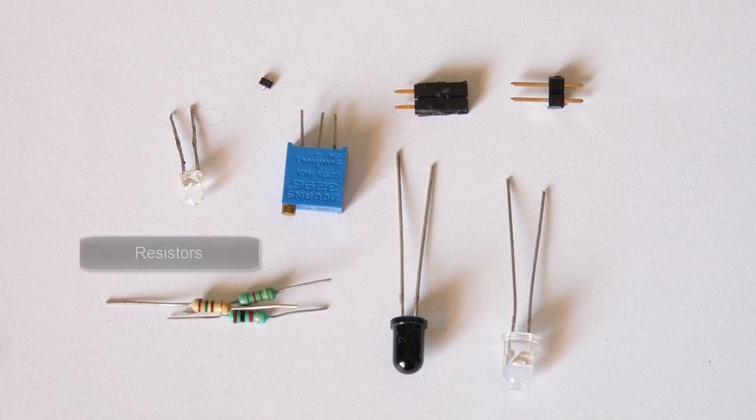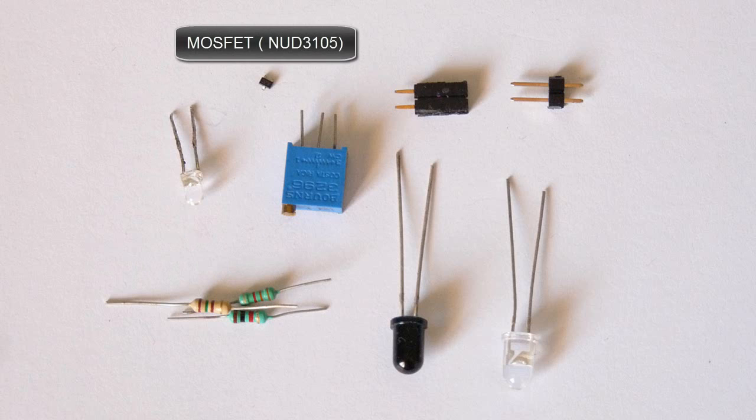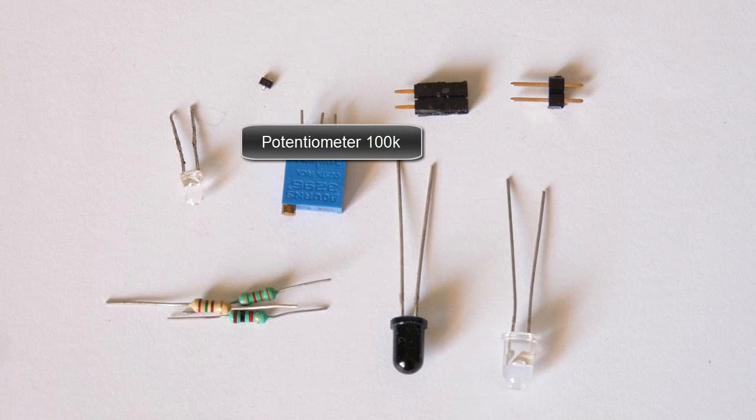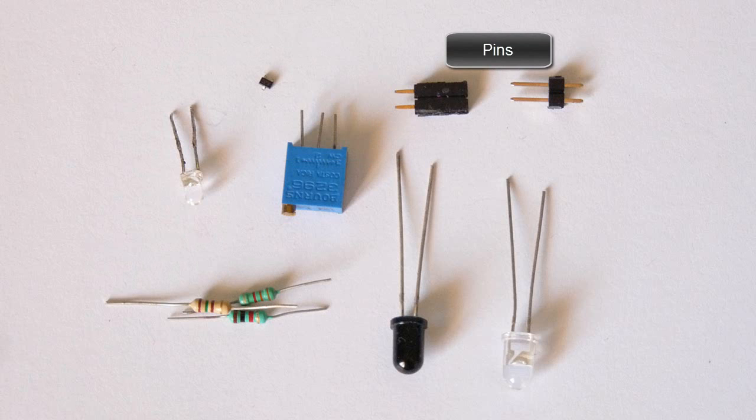To make this, you need an IR transmitter diode, IR receiver diode, a few resistors, one LED, one N-MOSFET, one 100k potentiometer, and some pins.